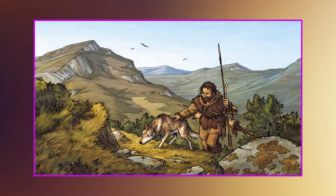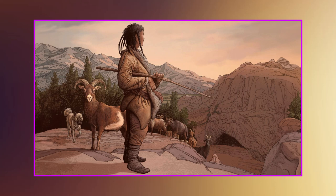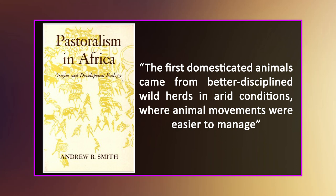Domestication took a long time, and the earliest indication of domestication is of a dog, but it was most likely not for food. It was widely assumed that sheep and goats were the first species to be domesticated for food purposes. The behavior of the animals was an important feature that played a big influence in domesticating them. According to Andrew Smith, Pastoralism in Africa (Johannesburg, 1992), the first domesticated animals came from better-disciplined wild herds in arid conditions where animal movements were easier to manage.